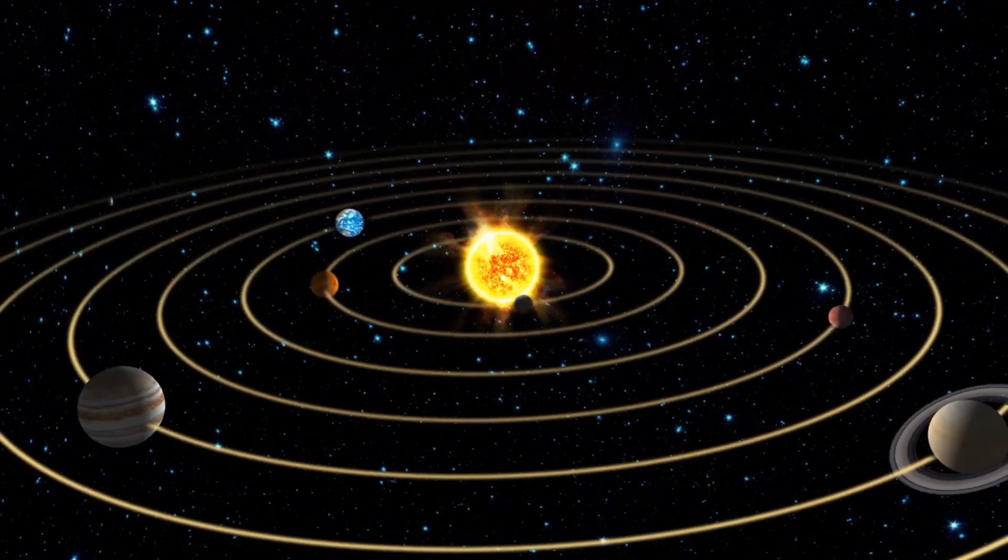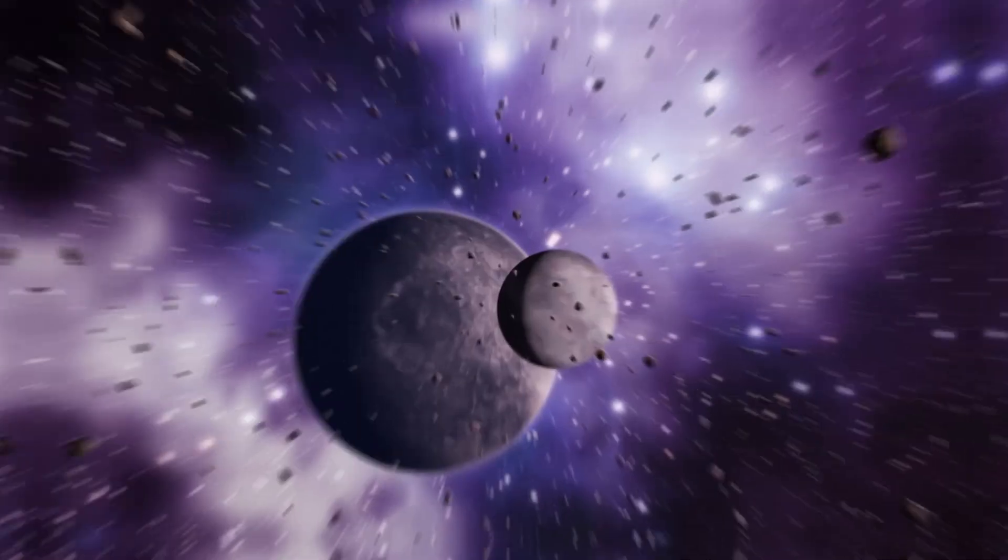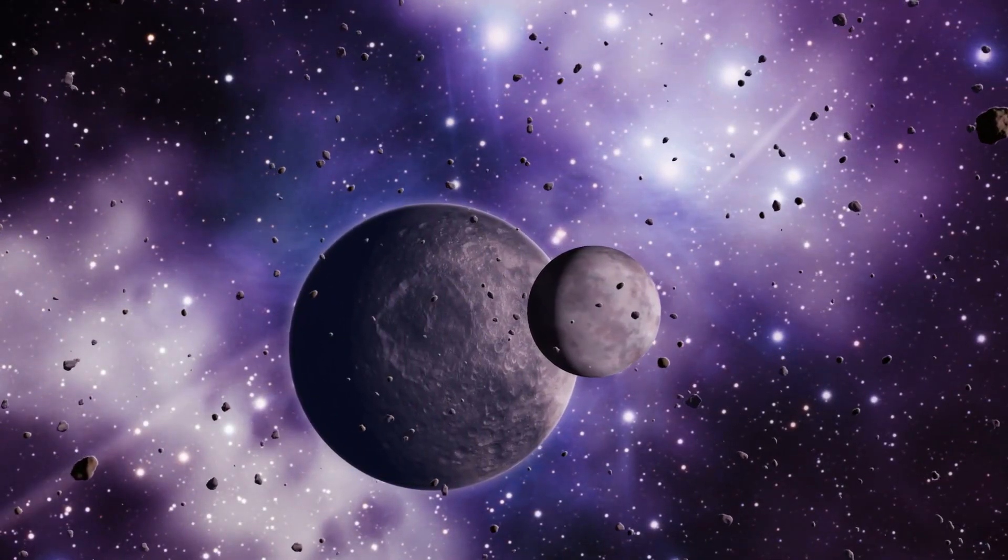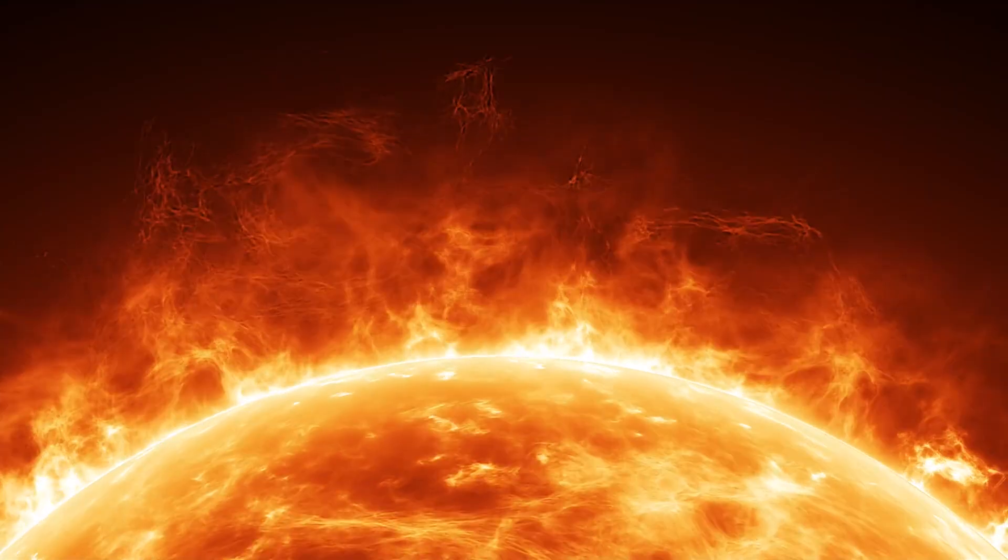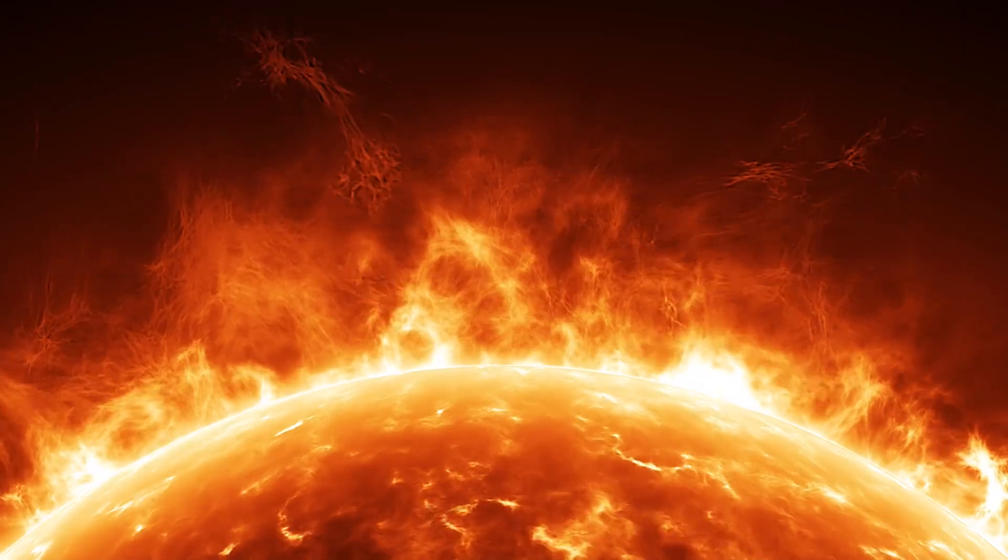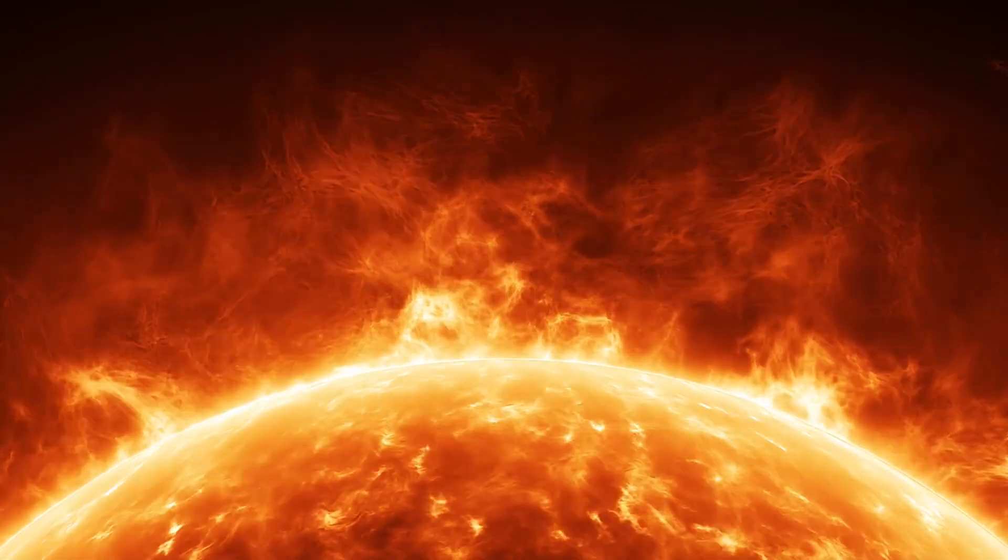Although it obviously didn't look like that to begin with. So, through this cloud, everything started to form. But what exactly was the first thing to form? Well, what's the center of our solar system? That's right, it's the Sun. And that was the first domino to fall.